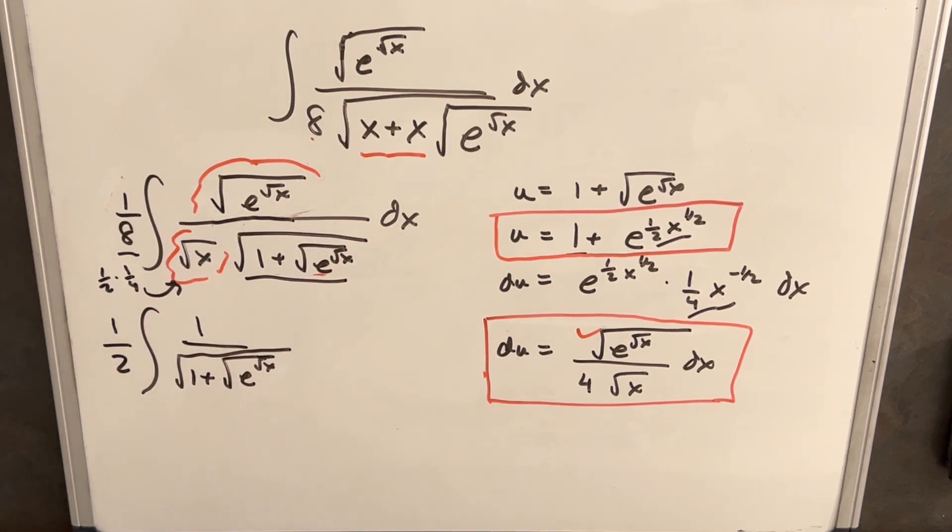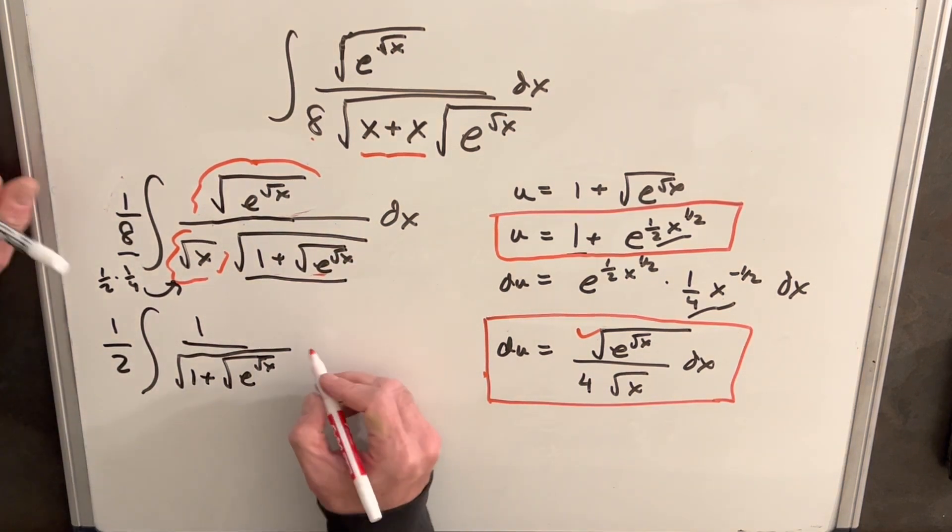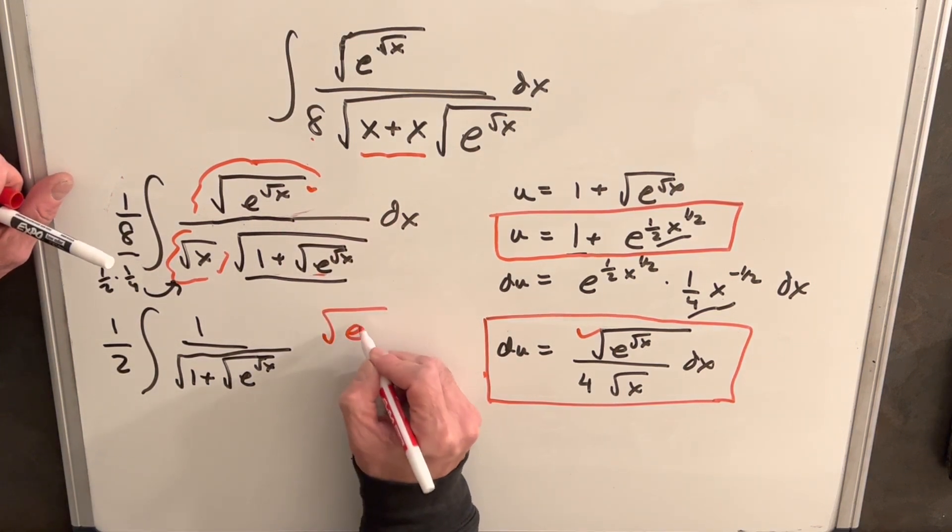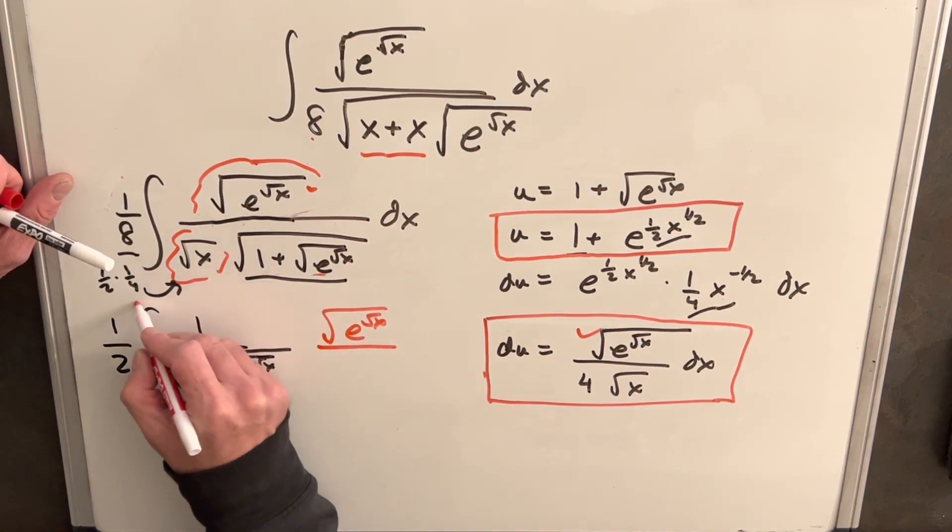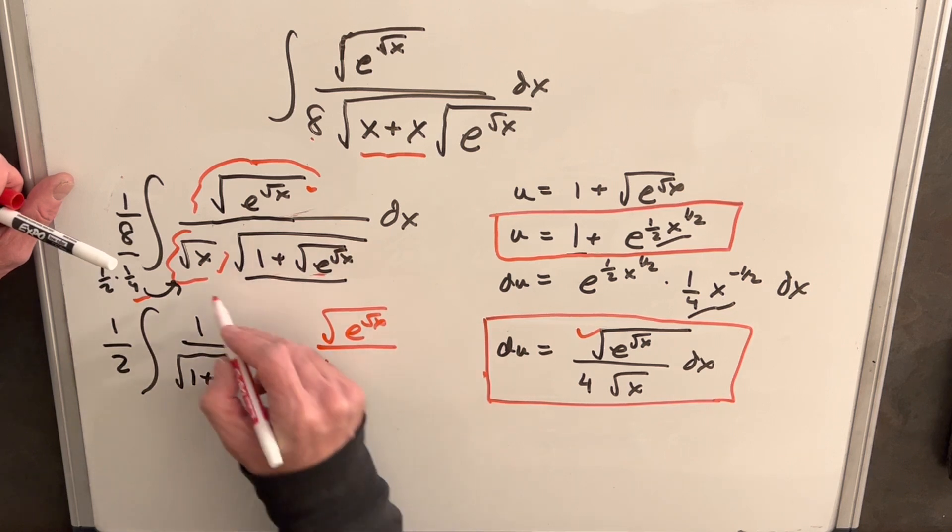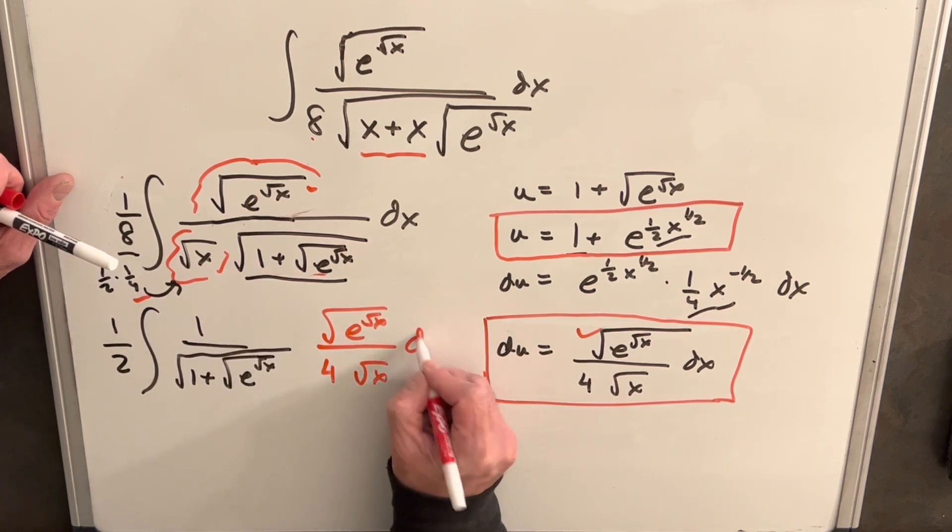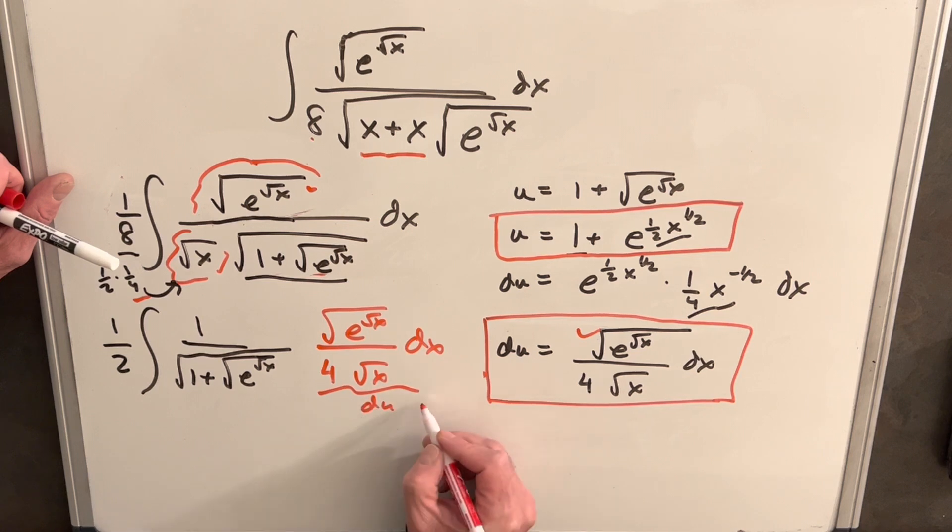Then we'll take our du stuff. So we're going to have this piece, we're going to have the square root of e square root of x. We'll have our 1 fourth that we brought in, and we'll have our square root of x dx. And so then we have all of our du right here.